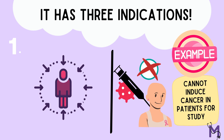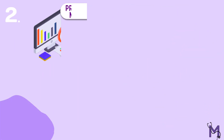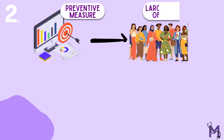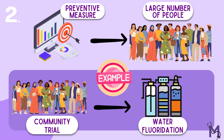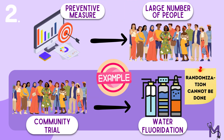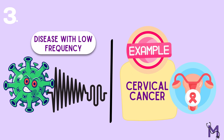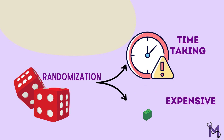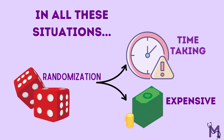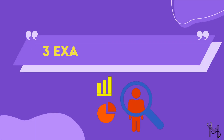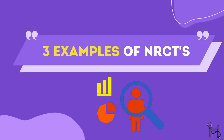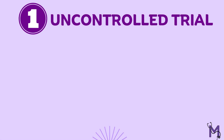First, when conditions do not lend themselves — for example, you cannot induce cancer in a person just so that you could study the disease. Second, in conditions where preventive measures can be applied only to a large number of people, like in the case of community trials for water fluoridation, randomization cannot be done. Third, in case of diseases whose frequency is extremely low, like cancer of the cervix — it would take too much time and money to conduct randomized trials in all these situations.